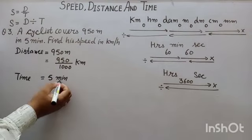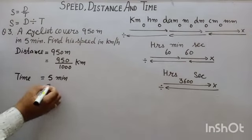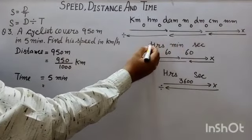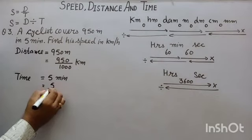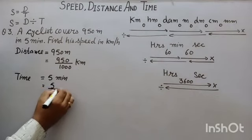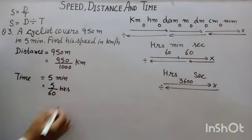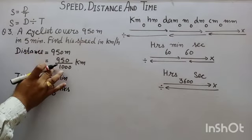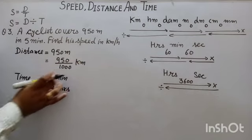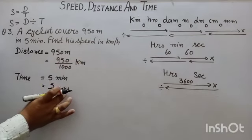And minutes into hours. We will divide by 60: 5 by 60 hours. Now, our distance is 950 by 1000 km, and time is 5 by 60 hours.